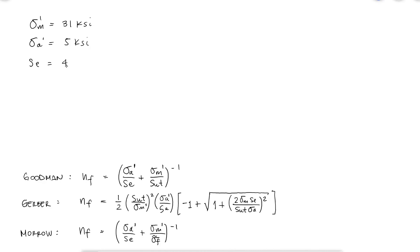At this point, we have almost everything we need. For the Morrow criterion, we need to know the true fracture strength. Looking up this property is not always easy, so a reasonable estimate is often used. If using ksi, the true fracture strength is 50 more than the ultimate strength, and if using megapascals, the true fracture strength is 345 more than the ultimate strength.